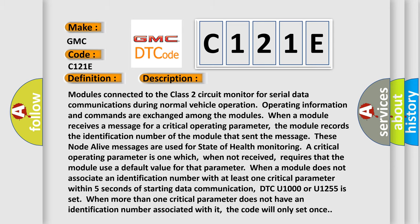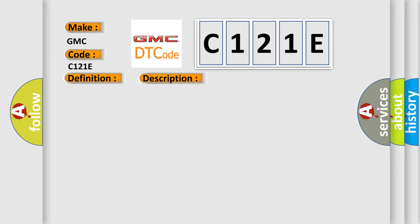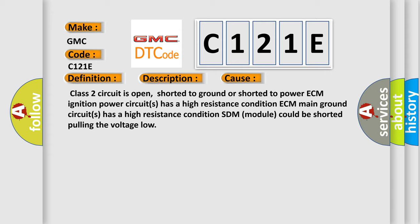This diagnostic error occurs most often in these cases: Class 2 circuit is open, shorted to ground or shorted to power; ECM ignition power circuits has a high resistance condition; ECM main ground circuits has a high resistance condition; SDM module could be shorted pulling the voltage low.